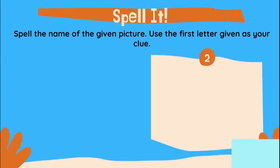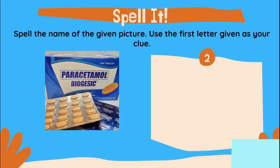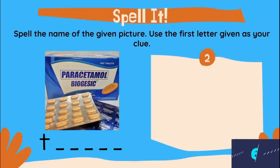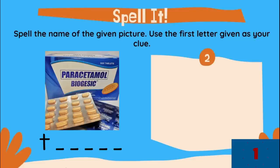Let's have the second picture. What do you call this one? The first letter is T. What do you think is the word? Type now your answer. And the correct word in number two is tablet, T-A-B-L-E-T. If this is your answer, you are great.